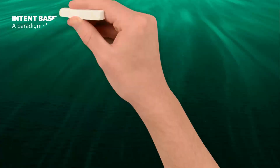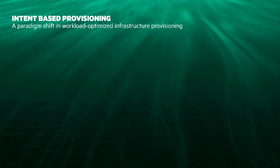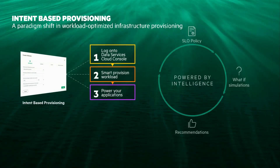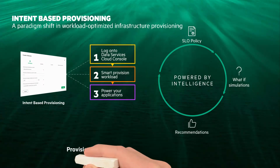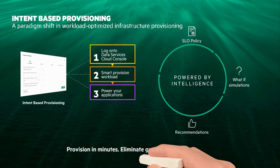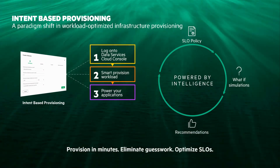Next is a paradigm shift with intent-based provisioning. It eliminates the guesswork and deploys apps on the right resources across a global fleet. With intent-based provisioning, an infrastructure admin only has to specify the workload type, capacity, and host groups that need access to the workload.